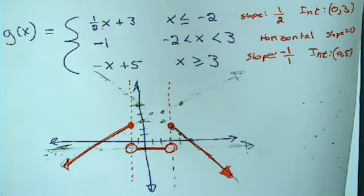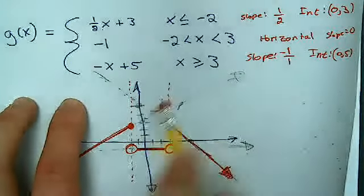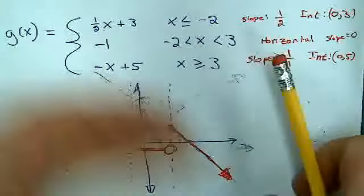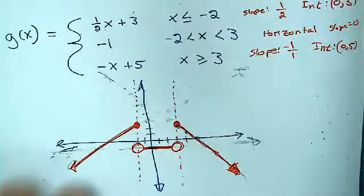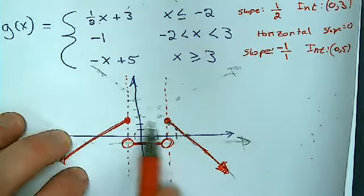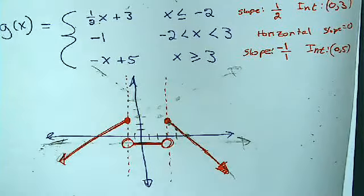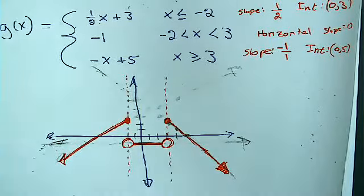Those are just surviving through the erasing process, because my eraser is cheap. The most important points that you need to have are these points here, and these here that show where each piece starts and stops. Those are the important ones.